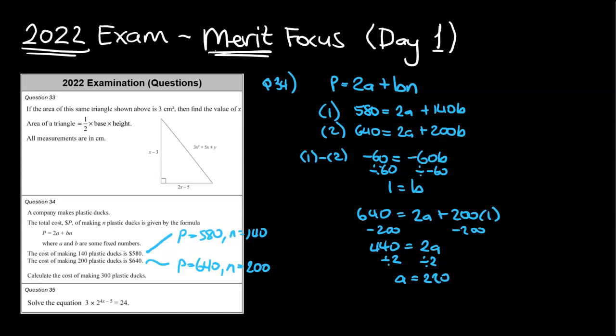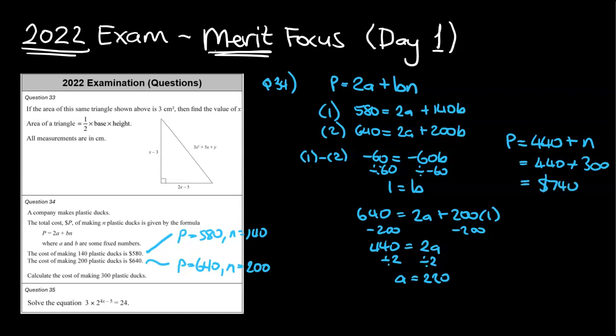So I've got a equals 220 and b equals 1. I can now figure out the actual question — noting it didn't tell me to find a and b, it told me to find how much 300 ducks would cost. So our formula for the price would be: price equals 2 times 220, which is 440, plus n being the 300 ducks. So my price is $740.